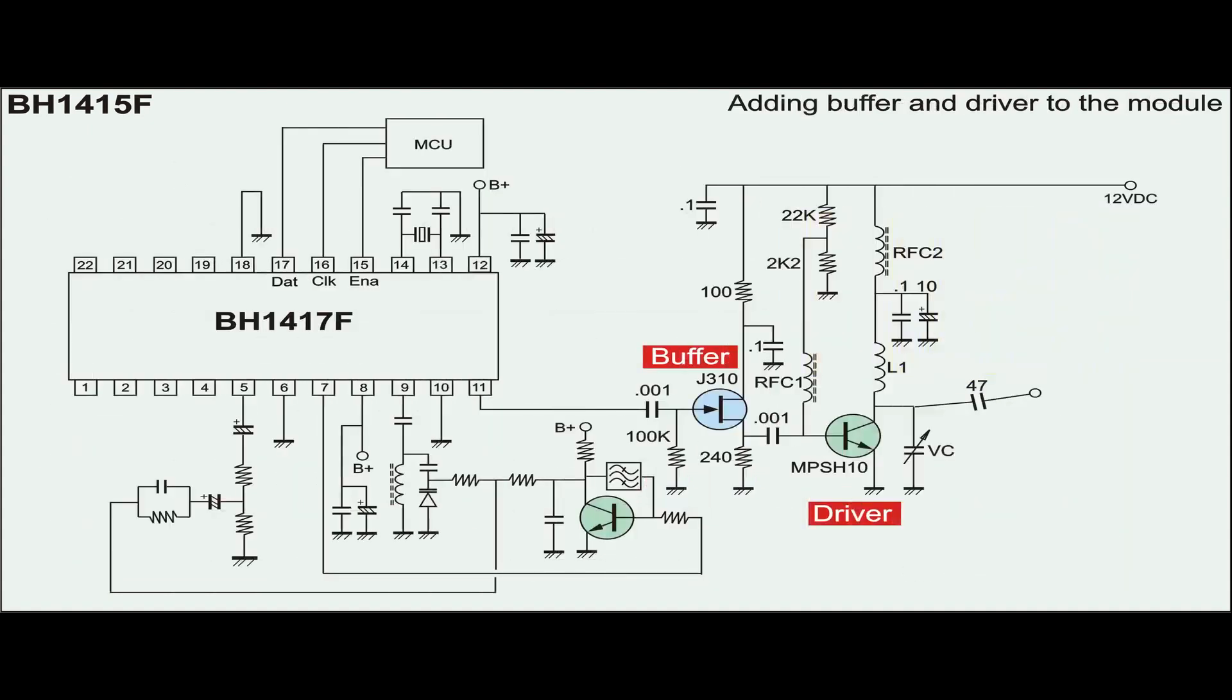The buffer and the driver stage are added to amplify the RF output signal from pin 11 of the module. No modification is made to the original circuit of the BS1415. A variable capacitor is installed at the output of Q2 so that it resonates at 88.2 MHz.